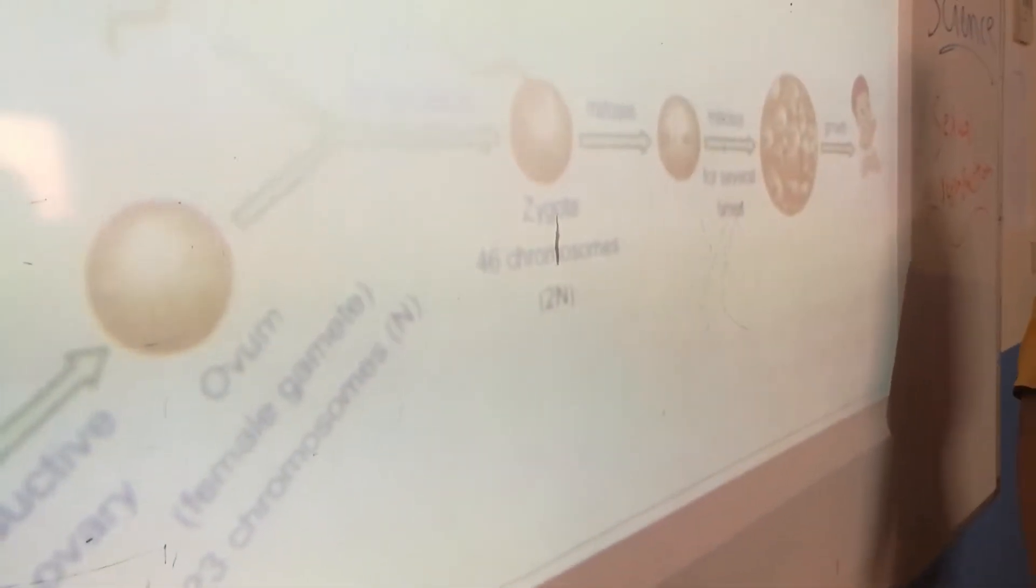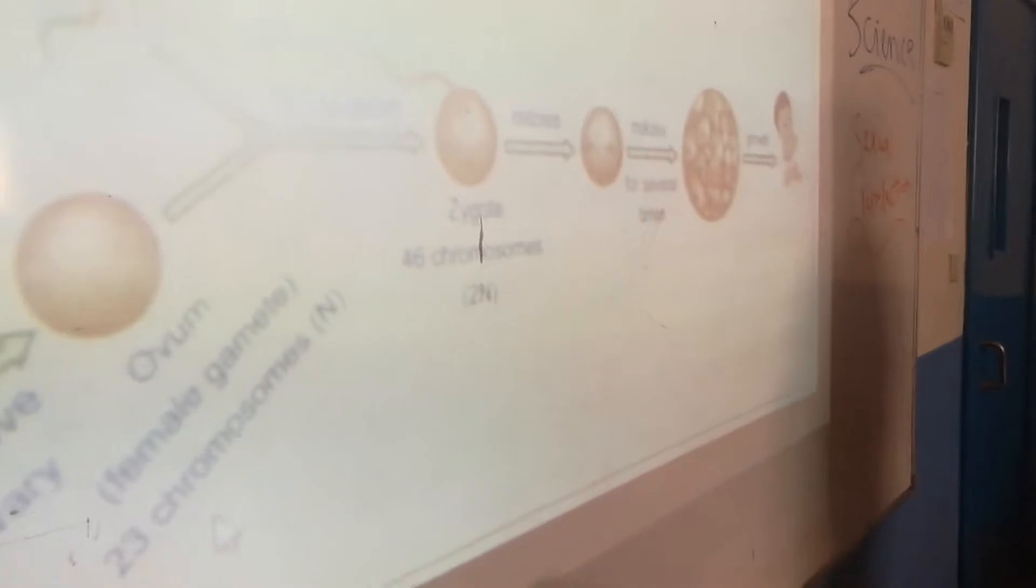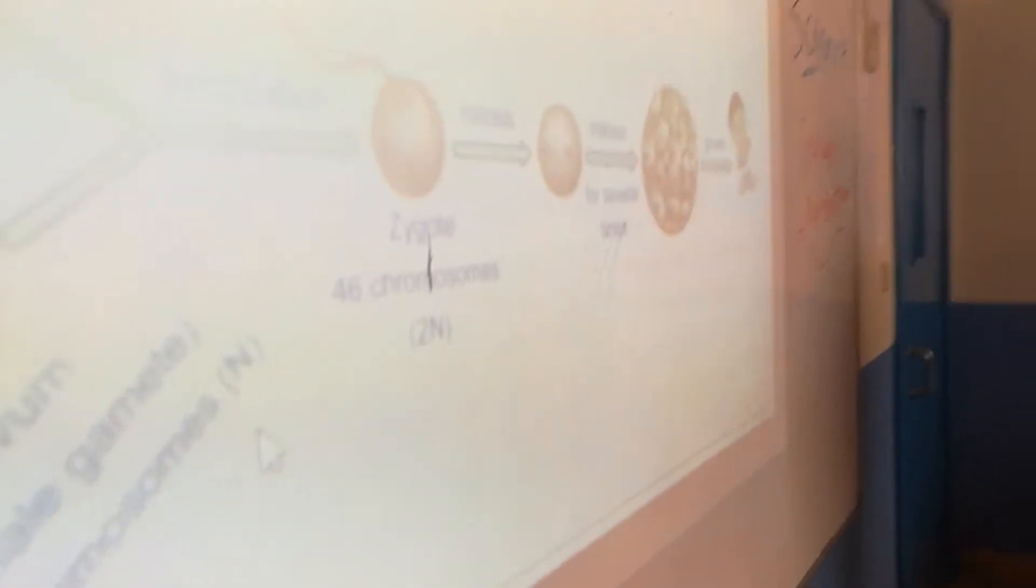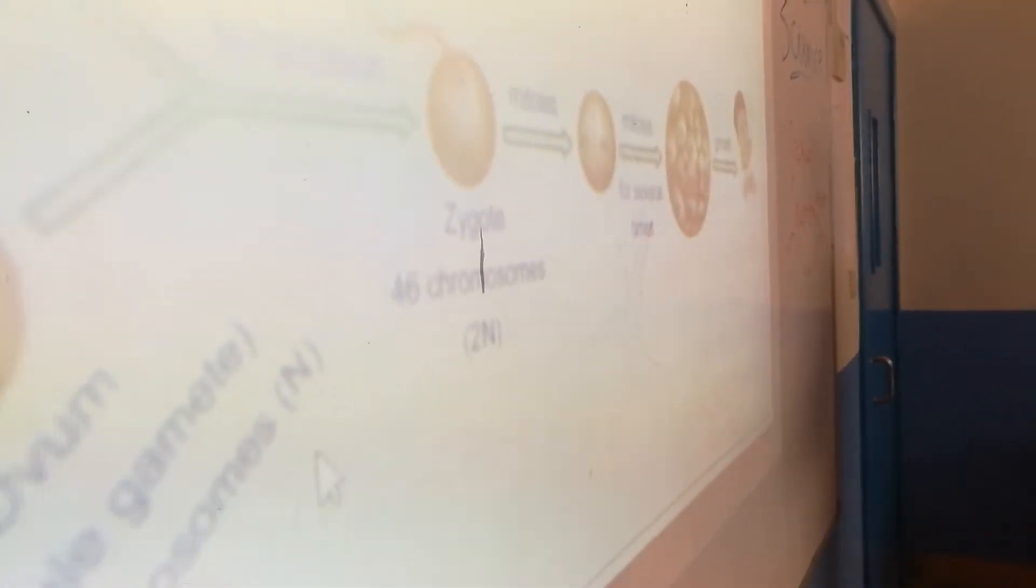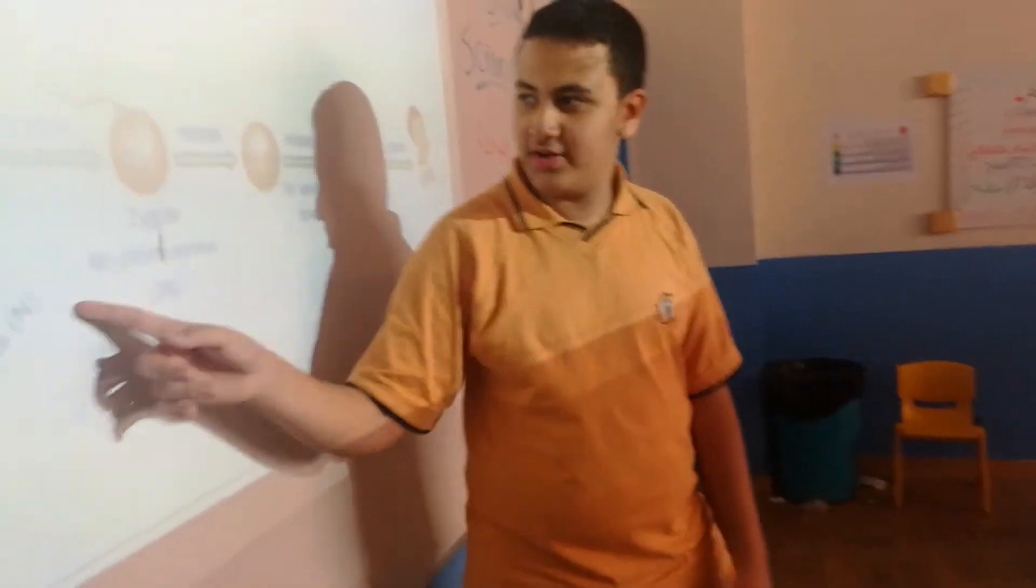Half number of chromosomes. The parent's cell number is 23, 23 chromosomes. When it combines together, it means the zygote.